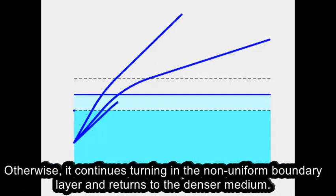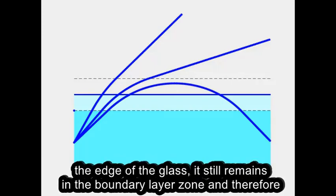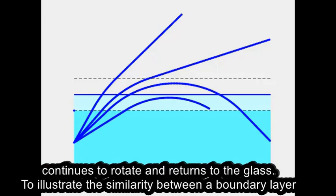it continues turning in the non-uniform boundary layer and returns to the denser medium. In the video, although the third ray goes beyond the edge of the glass, it still remains in the boundary layer zone and therefore continues to rotate and returns to the glass.